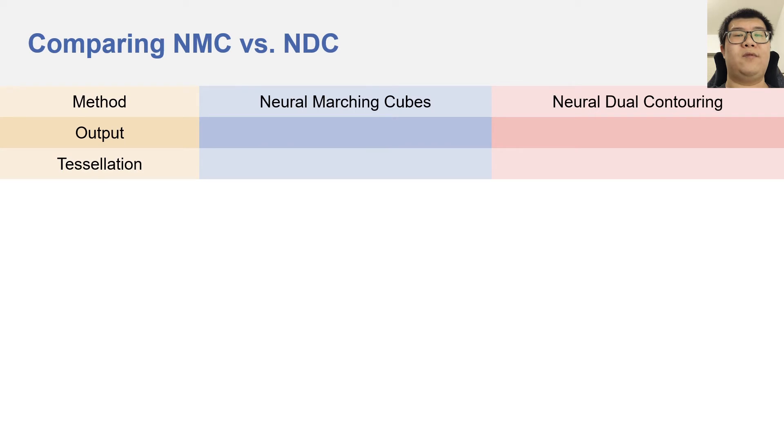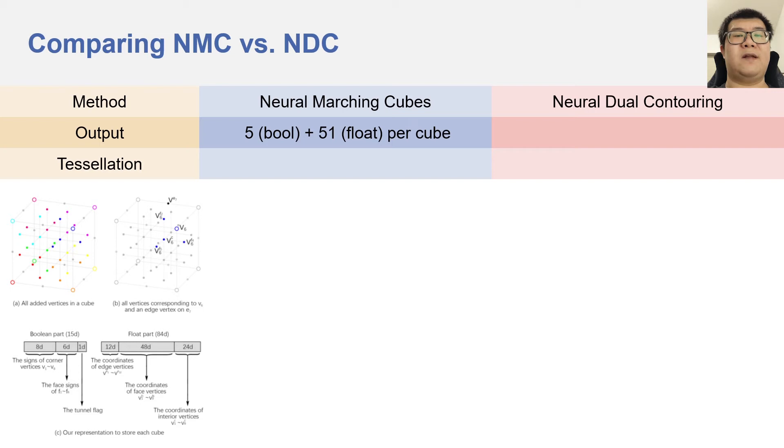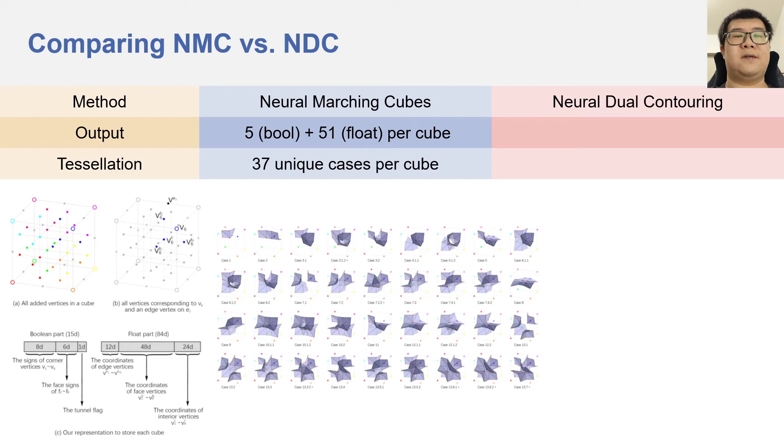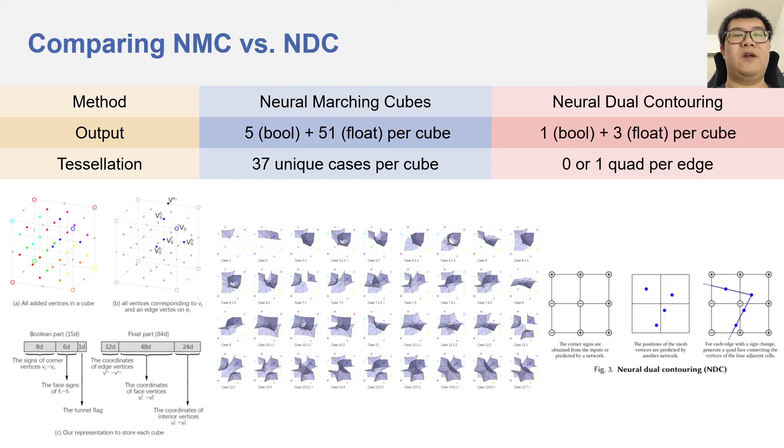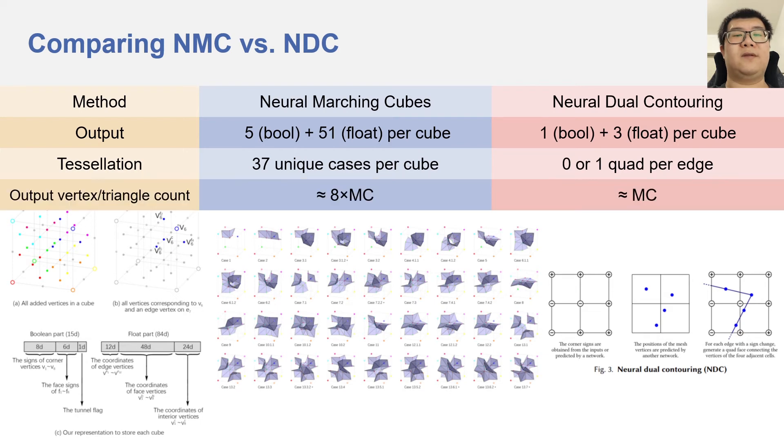First, let's look at the output complexity and mesh tessellation. NMC outputs 5 boolean values and 51 float values for each cube, and it has 37 unique tessellation cases. This additional complexity compared to marching cubes is required for reconstructing sharp features. Ours produces 1 boolean value and 3 float values, and we simply create at most one quad face for each edge. So our method is much simpler than NMC. As a result, NMC has 8 times the number of vertices and triangles compared to marching cubes, and ours has approximately the same amount as marching cubes.